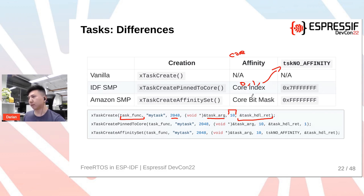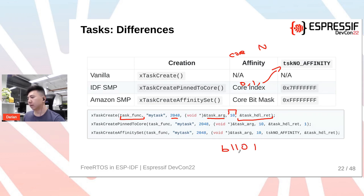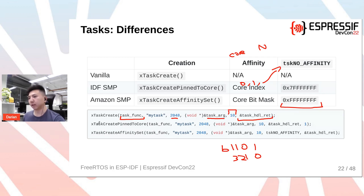With Amazon SMP FreeRTOS, things are more flexible because there are n cores. Core affinity is provided as a bitmask. For example, a binary value of 1101 means the task can run on cores zero, two, and three, but not core one. To allow a task to run on all cores, provide a bitmask of all ones. In IDF-SMP you create a task using xTaskCreatePinnedToCore with a core index argument; in Amazon SMP you use xTaskCreateAffinitySet with a core affinity mask.